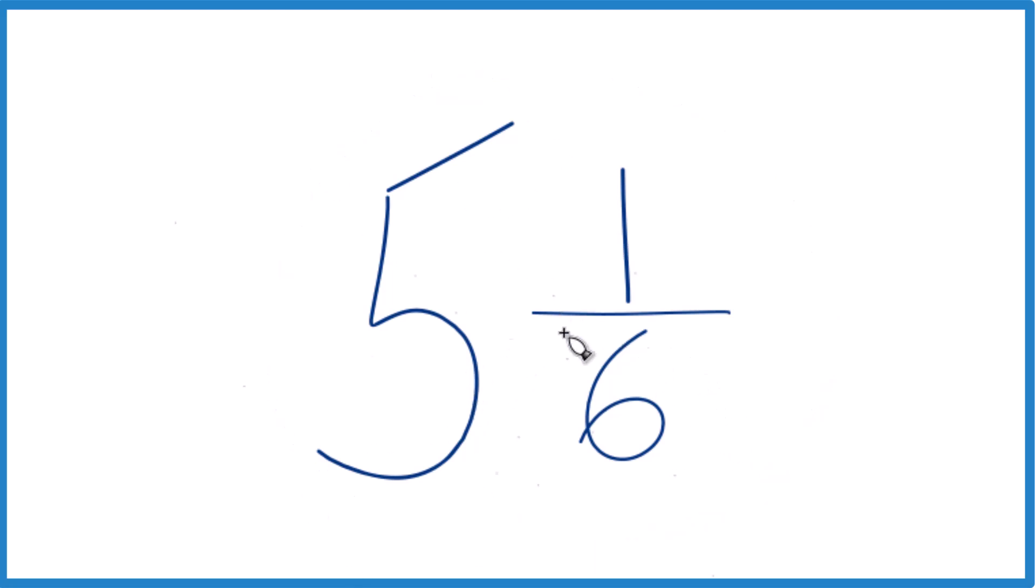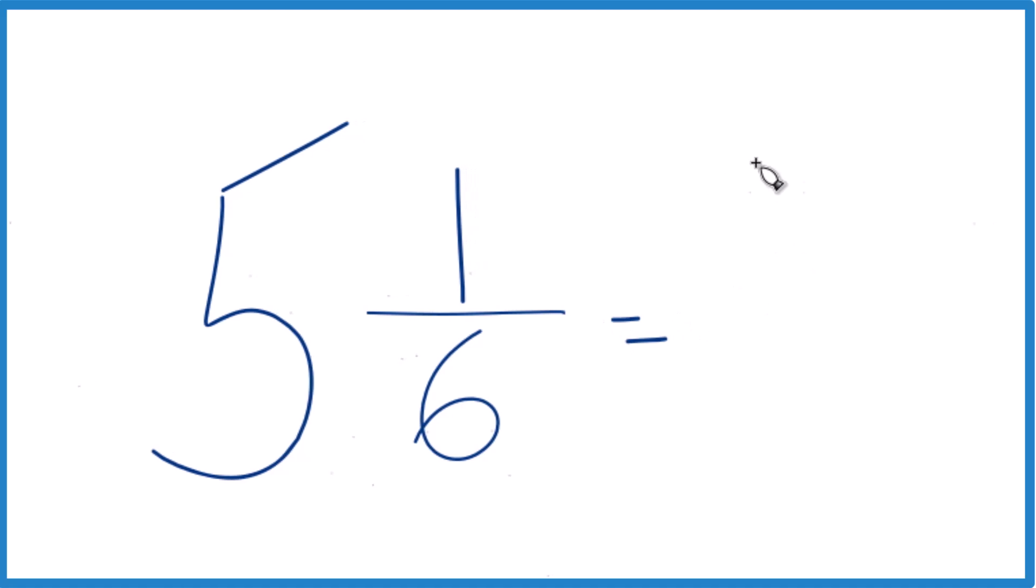You take the whole number, 5, multiply that by 6. 5 times 6 is 30, and you add that to the 1. 30 plus 1, that equals 31, and that's going to be the numerator.